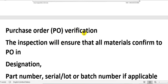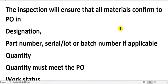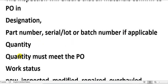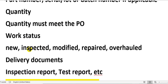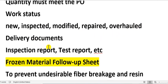For the purchase order, you must check: part number, supplier, quantity, work status (new, inspected, modified, repaired, or overhauled), delivered documents — meaning the forms or certificate — and the inspection report. If the component is an engine, APU, or landing gear, you must attach an inspection report and test report.